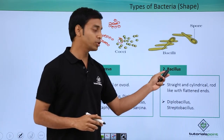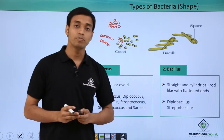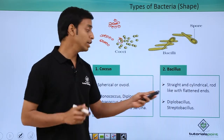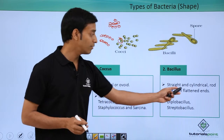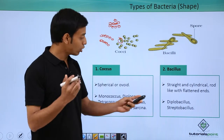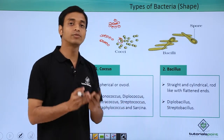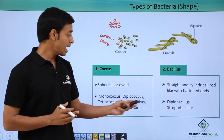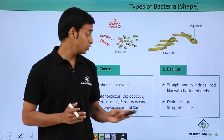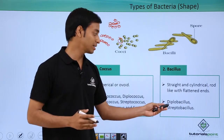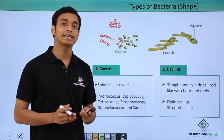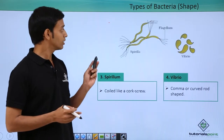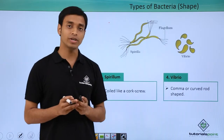The second type based on shape is known as bacillus. These are straight, cylindrical, and mostly rod-like in shape with flattened ends. They can also occur as diplobacillus if two rod-like structures are together, and streptobacillus if they occur in chains.